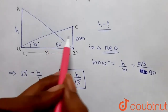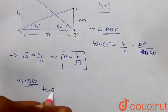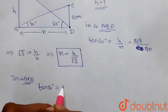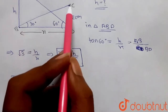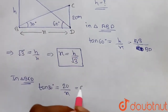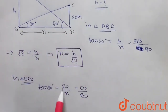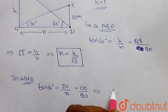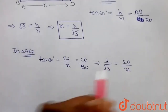In triangle BCD, tan(30°) = CD / BD = 20 / x. Since tan(30°) = 1/√3, we get 1/√3 = 20 / x, so the value of x = 20√3.